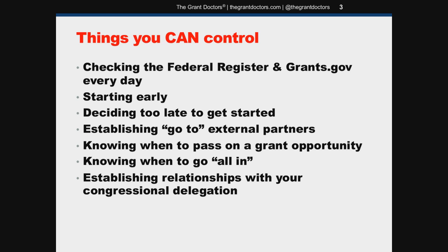First things first: checking the Federal Register and grants.gov every day. This is essential. Not every grant opportunity posts to both at the same time — sometimes a grant posts on the Federal Register and then three, five, or ten days later it shows up on grants.gov, and sometimes the reverse. So it's very important to always check both sources every day. With grant application windows shortening to 45 and 30 days, it's really important to stay on top of it so you don't lose any time.